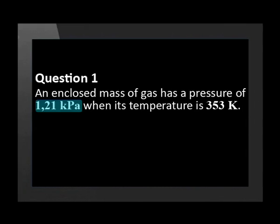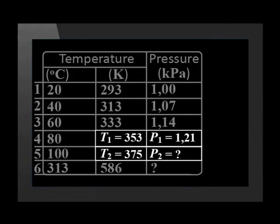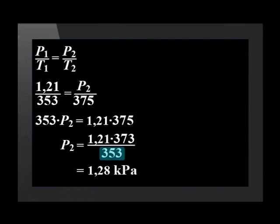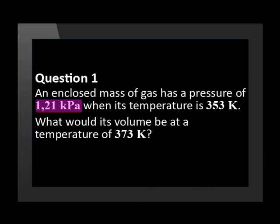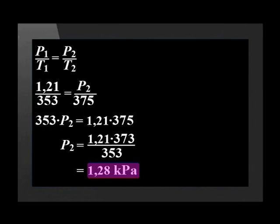Let's try a question and solve it with this equation. An enclosed mass of gas has a pressure of 1.21 kilopascals when its temperature is 353 Kelvin. What would its pressure be at a temperature of 373 Kelvin? We call the known data set T1 and P1, and the unknown data set T2 and P2. We substitute values into the equation and cross-multiply: 353 times P2 equals 1.21 times 373. We divide both sides by 353 and solve. The answer's unit must be kilopascals because P1's unit is kilopascals. Note that P1 and P2 must always have the same unit, and T1 and T2 must always be in Kelvin. Notice that this answer is the same as the one in the table.